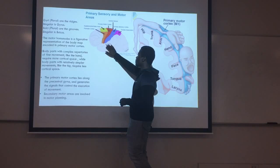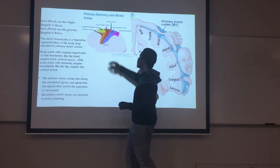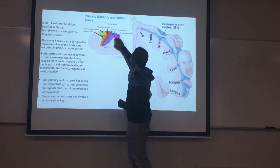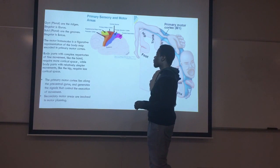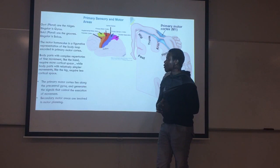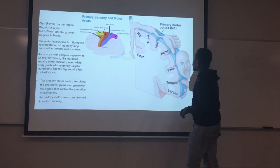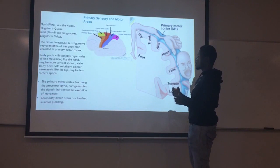The cerebrum is separated into the primary motor cortex, the central sulcus, and the primary sensory cortex. The cerebrum is also the part of the brain that deals with communication. It is also composed of the motor homunculus, which is a figurative representation of the body map encoded in the primary motor cortex. This diagram represents that certain limbs are easier to move.